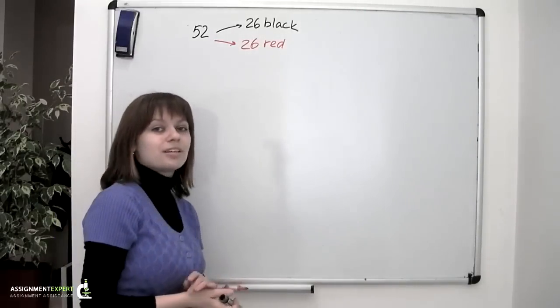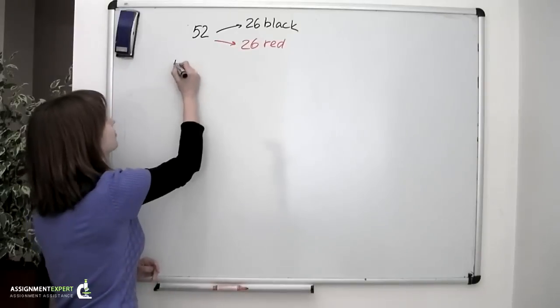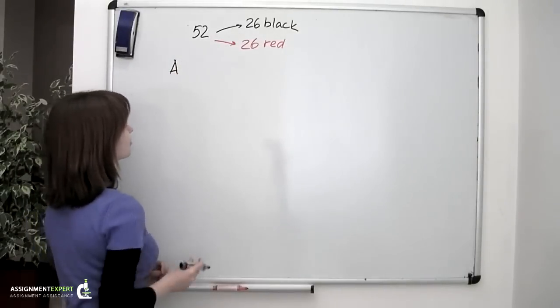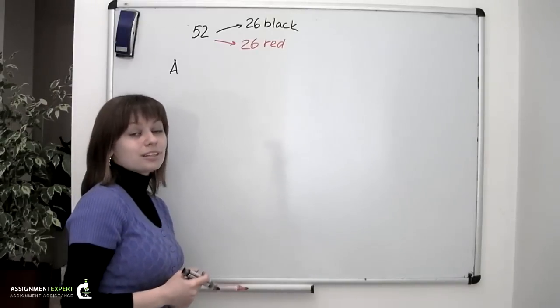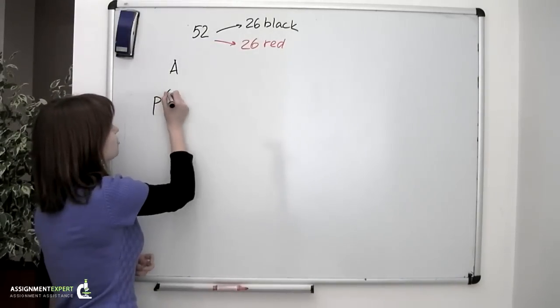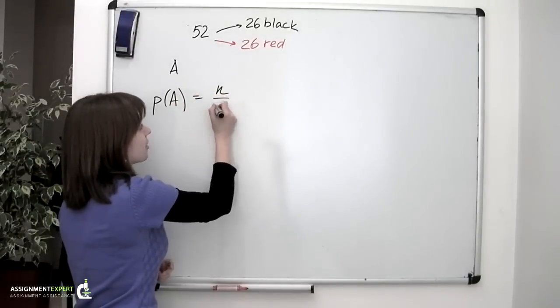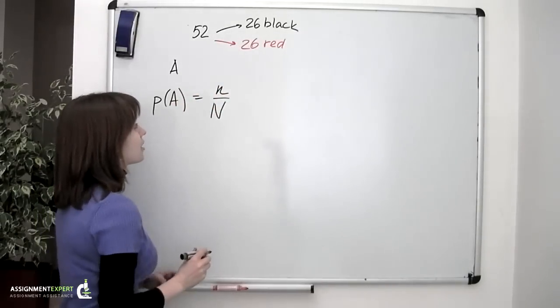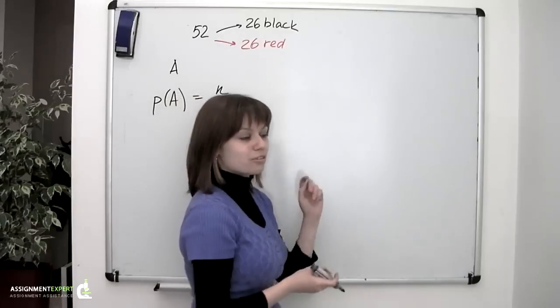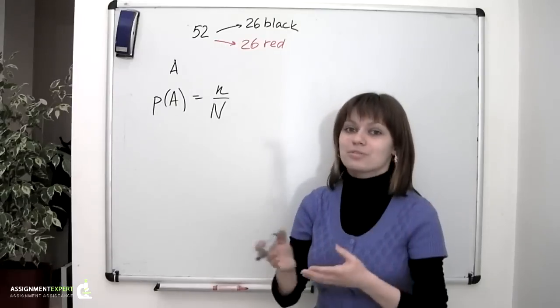Let's denote the event of picking one black card and three red cards as A. Recalling the classical probability formula, the probability of event A is equal to n divided by N, where small n stands for the number of favorable outcomes and capital N stands for the total amount of possible outcomes.